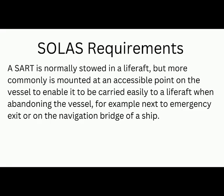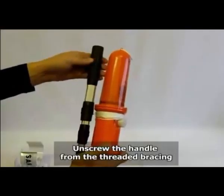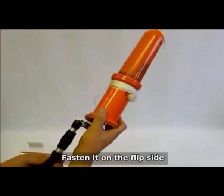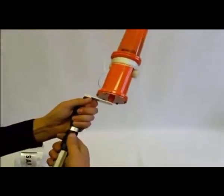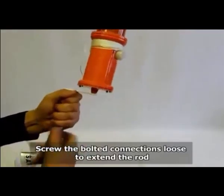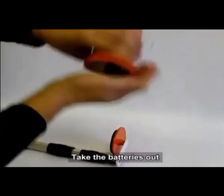Now let us come to the testing and maintenance of the SART. SART is an important device, part of the GMDSS equipment, used to send a distress alert — so it is a safety device and must be regularly checked. At least every month you must visually inspect the casing for cracks. If the SART is stored in an exposed position where weather may affect it, regular cleaning must be done. If supplied with a pole, check that it operates correctly. Check that the lanyard is neatly bundled and firmly secured to the SART, and make sure the IMO symbol is clearly visible. Check the battery expiry label to ensure sufficient battery life to cover the next routine voyage.